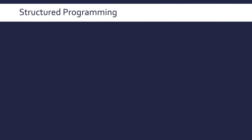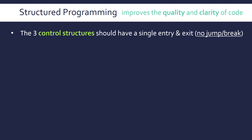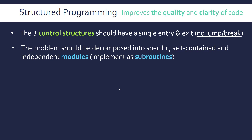Structured programming is a topic related to subroutines — it's a methodology meant to improve the quality and clarity of code. We've talked about the three control structures (constructs), and they should have a single entry and exit, so there should be no jumps or breaks where possible. Languages do have these constructs still, but they're not advised — it's better to avoid using specific jumps to certain lines or specific break points from loops. A second subset of this methodology is that problems should be decomposed into specific, self-contained and independent modules. With global variables, subroutines are inherently linked and not independent — that's why local variables tie into this. You implement these little modules as subroutines.